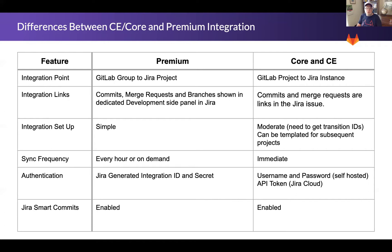The premium integration displays the links in the Jira development panel — a side panel on the right side of the Jira issue view — and consolidates the links by type, such as branch, commits, or pull requests. The basic integration, on the other hand, shows the links as individual links in the same area as the issue comments, making the issue longer and viewing linked issues while reading comments more difficult.